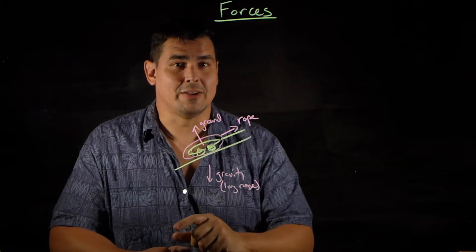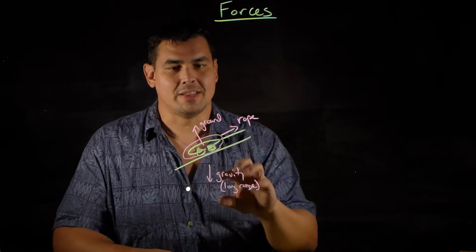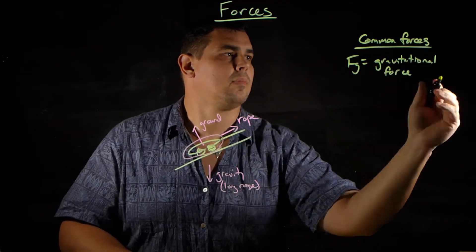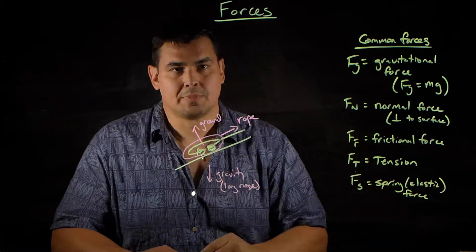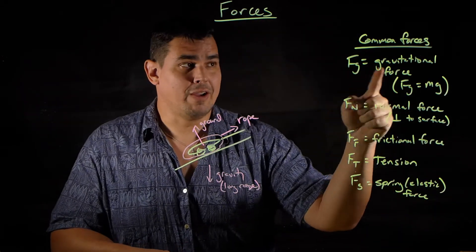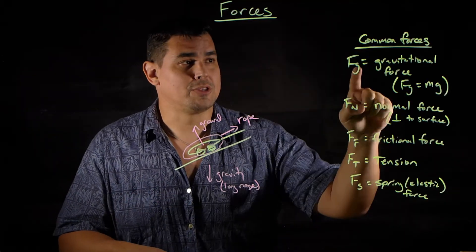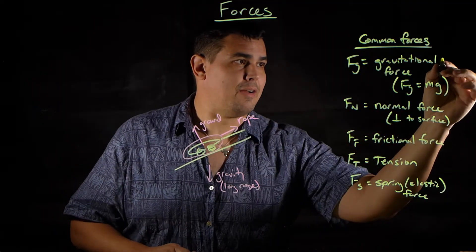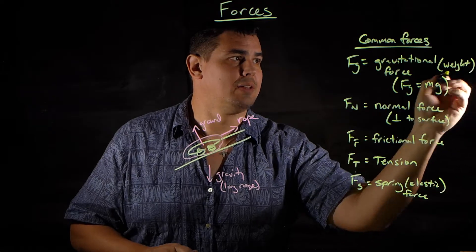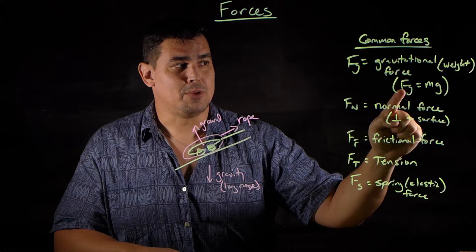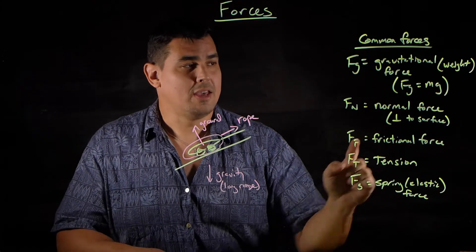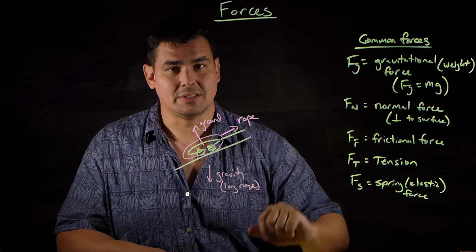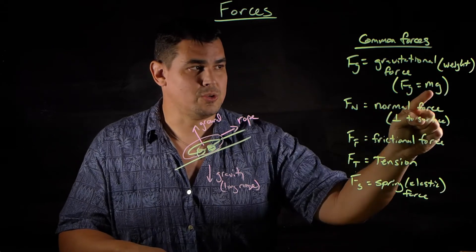Before drawing free body diagrams, let's identify some common forces. First is Fg, the gravitational force — also called weight. Anytime you're doing something on Earth, there's always a gravitational force. You can write it as Fg or as Mg, because weight equals mass times G, where G is the gravitational field constant of 9.8 newtons per kilogram. You'll use that form in equations.